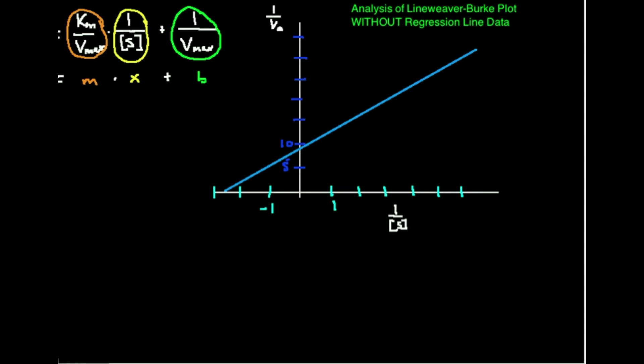You should have been given a table of data points — a substrate concentration and what initial rate was observed, maybe five or so of those. Then you take the reciprocal of those and plot one over the initial rate versus one over the substrate concentration. That's the double reciprocal plot — the Lineweaver-Burk plot. Two different names for it.